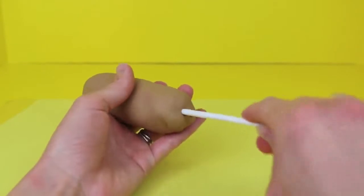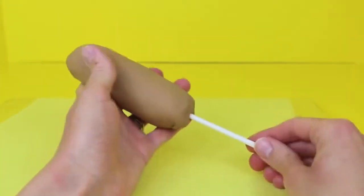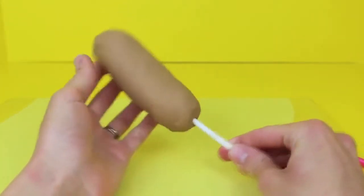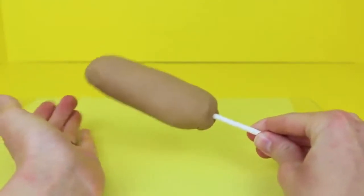To make it more of a true hot dog I'm going to now insert the stick. There we go it's nice and strong and it helps hold the corn dog together too.